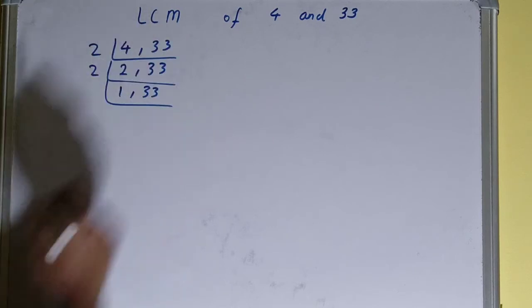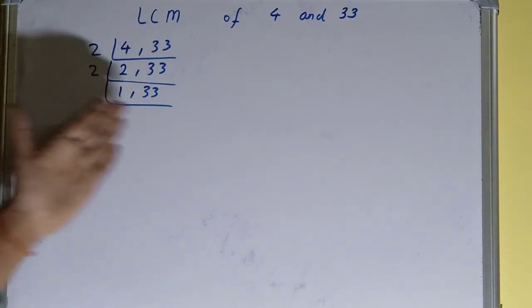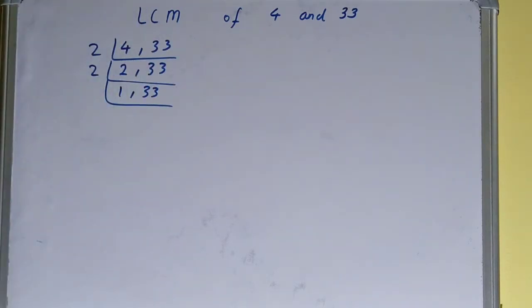Now again, if you see, none of the numbers is divisible by 2. So what we'll do is go to the next prime number, that is 3. And if you check, this number is divisible by 3, so divide it.